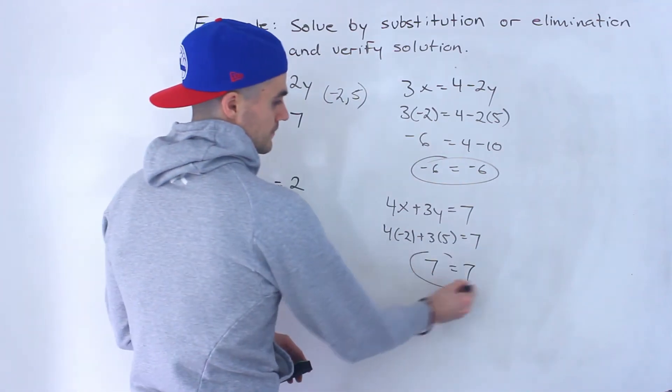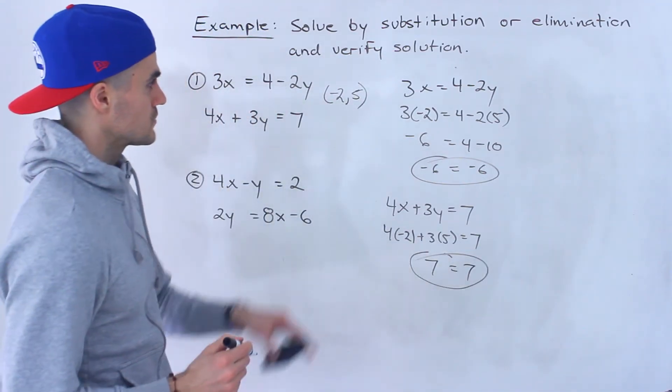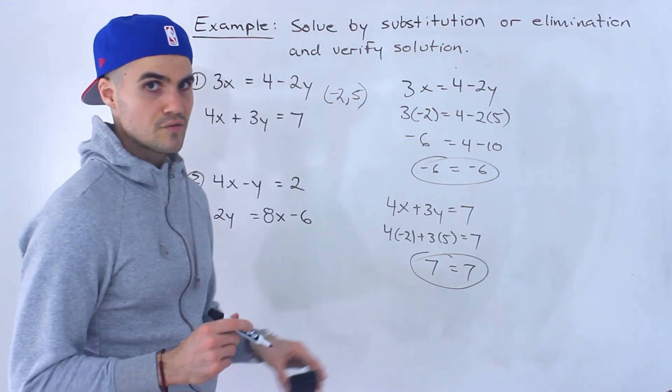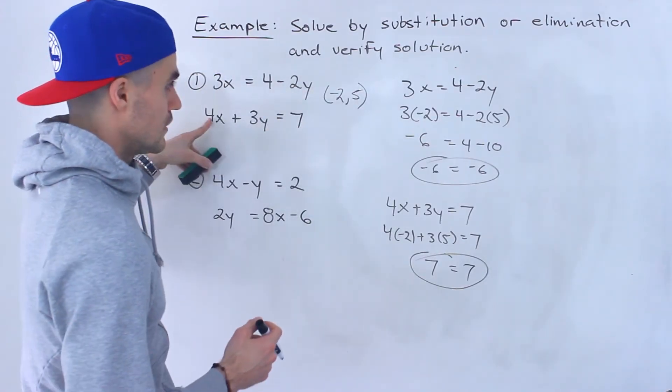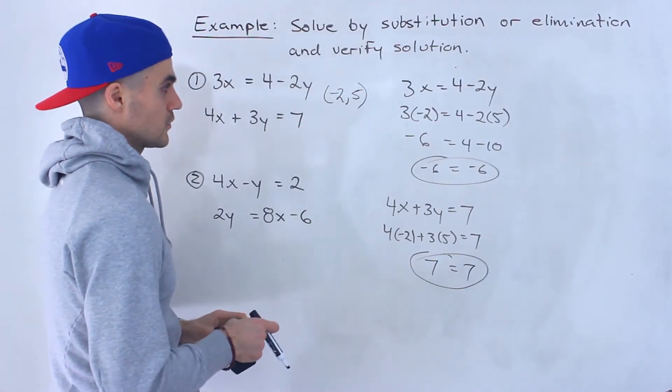7 equals 7. So we verified it there as well. We could be pretty confident negative 2 and 5 is the correct answer for this first system of equations.